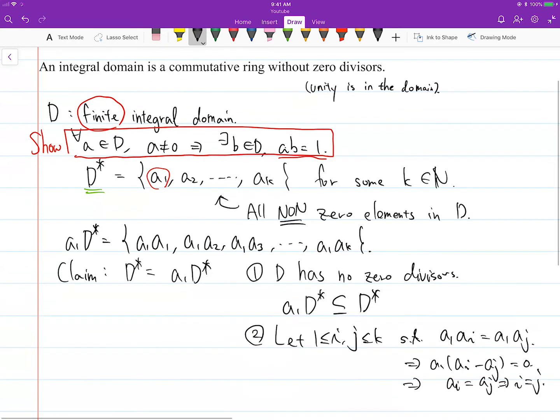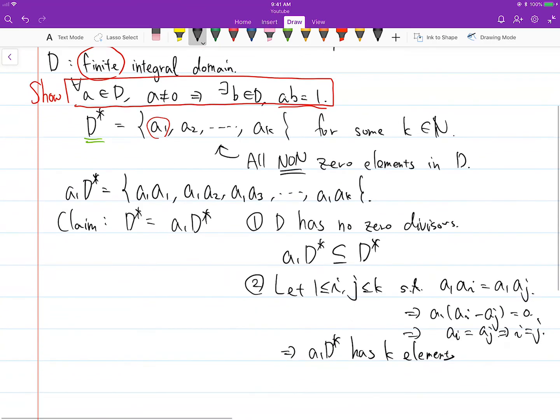So this means that A1 D star has K elements. And then by combining these two facts, we can say that D star equals A1 D star.